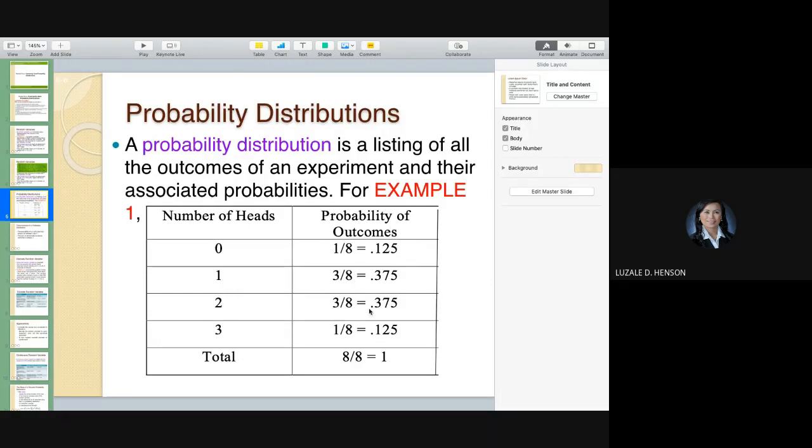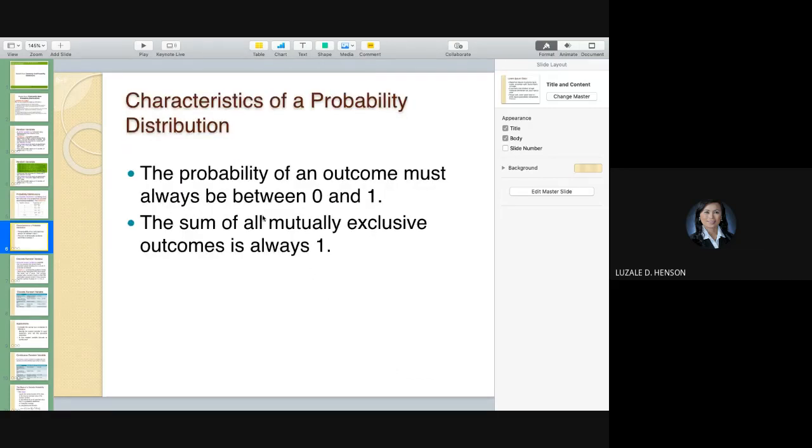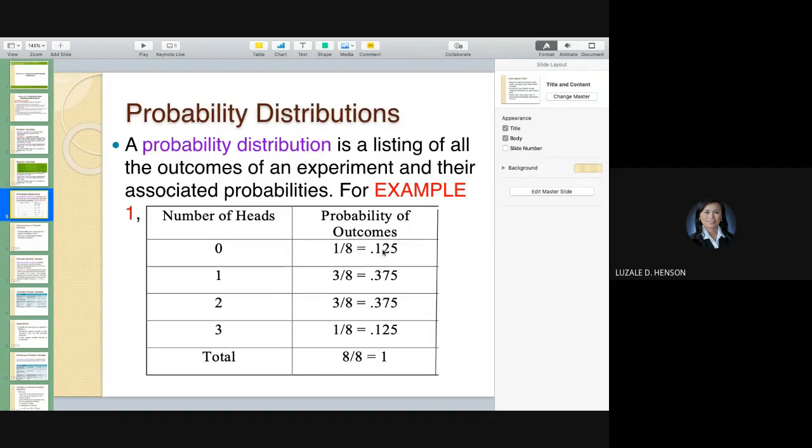If you're going to get the sum of this, then you have a total of one, because that's one characteristic of a probability. The sum is equal to one. So, for the next slide, we have this characteristic of a probability distribution, in which the sum of all mutually exclusive outcomes is always one. The probability of an outcome must always be between zero and one. As you can see, between zero and one. There's no probability one point something, or even more than one. The total sum of all probabilities just equal to one. That's one characteristic.